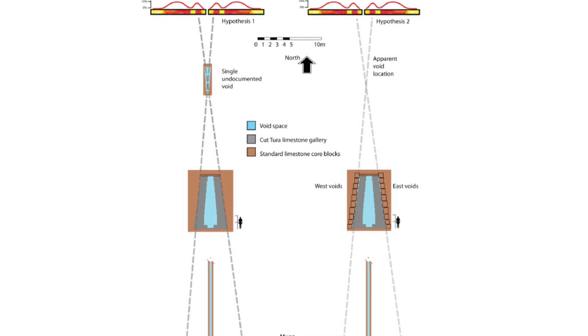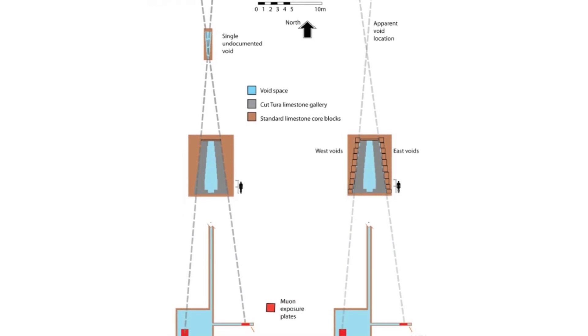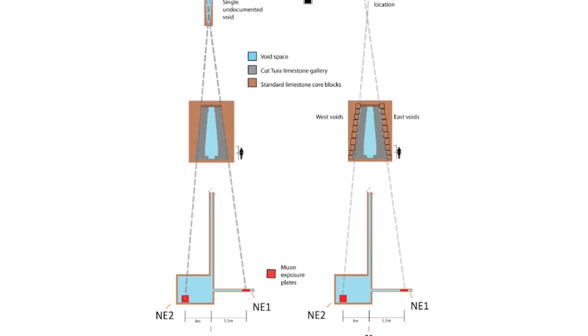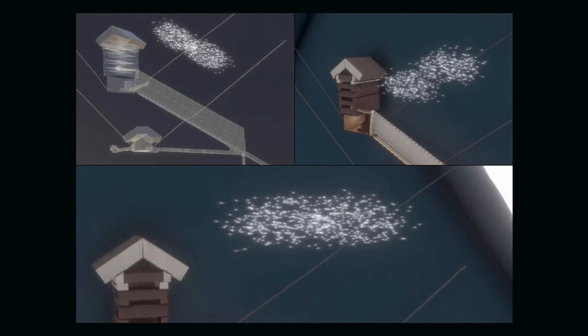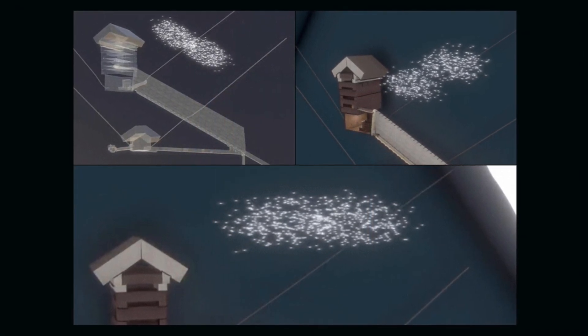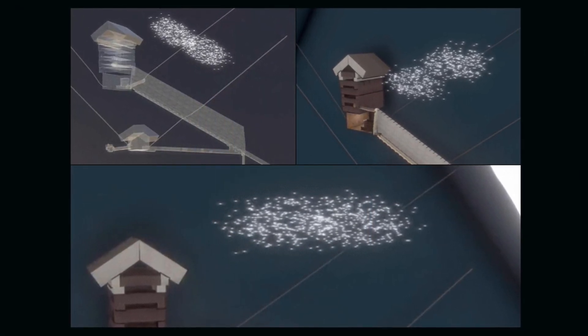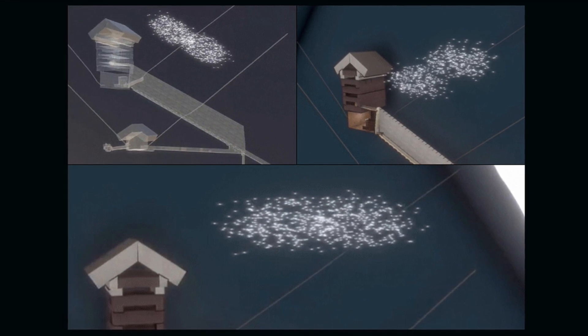One Egyptologist did hit the news to explain how the muon detectors did not actually find a hidden chamber, that it was in fact a scanning artifact and that the results can be explained in other ways. I made a video on this which is linked below in the description.